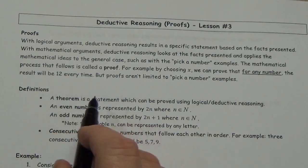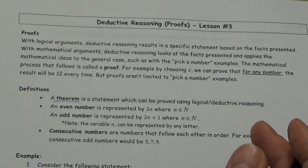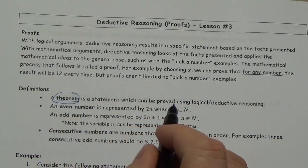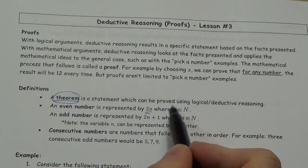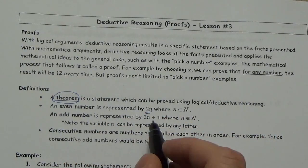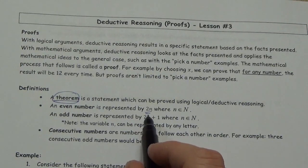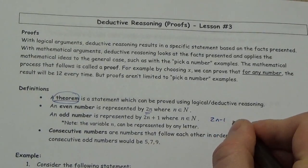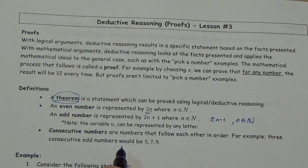Just some definitions. A theorem is a statement which can be proved using logical or deductive reasoning. An even number is represented by 2n, where n is an element of the naturals. So if you pick any natural number and multiply it by 2, the result will be an even number. An odd number is always going to be represented by 2n plus 1, or for that matter 2n minus 1, where n is an element of the naturals.